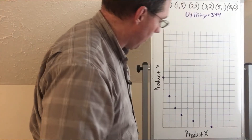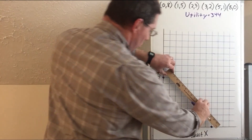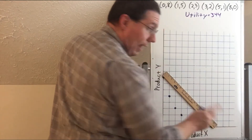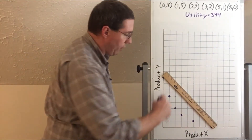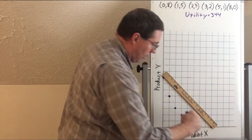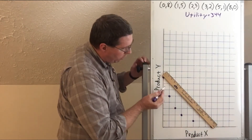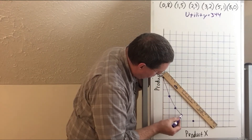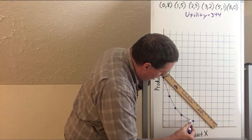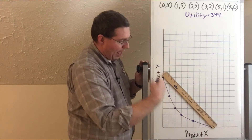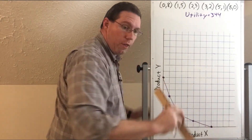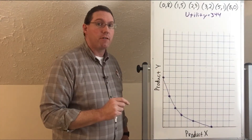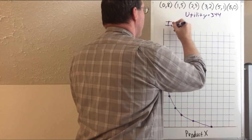Look what happened. What we had previously when it was an indifference line — before we accounted for the law of diminishing marginal benefit — was a straight line. But now our line has bowed in and it is now a curve. This is much more realistic. This is what we call an indifference curve.